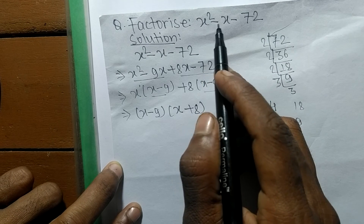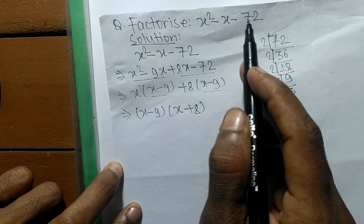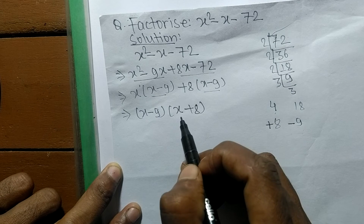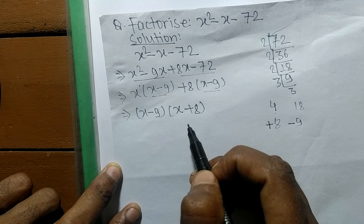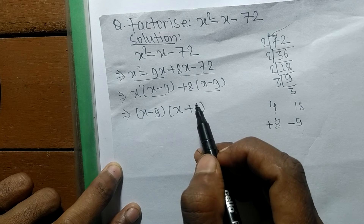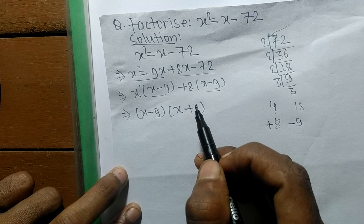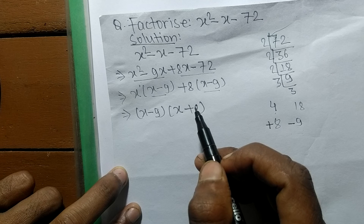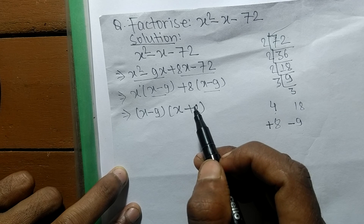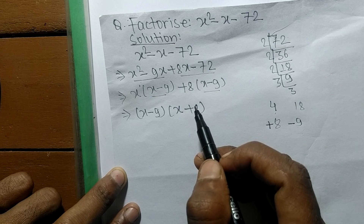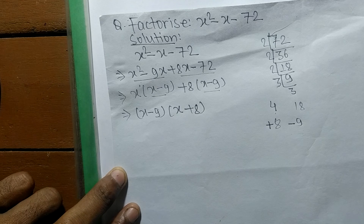So the prime factors of x squared minus x minus 72 are (x minus 9)(x plus 8). In this way we can solve any factorization problem. If you have any question related to math and science, just comment your question below and we shall provide a video solution. Thank you.